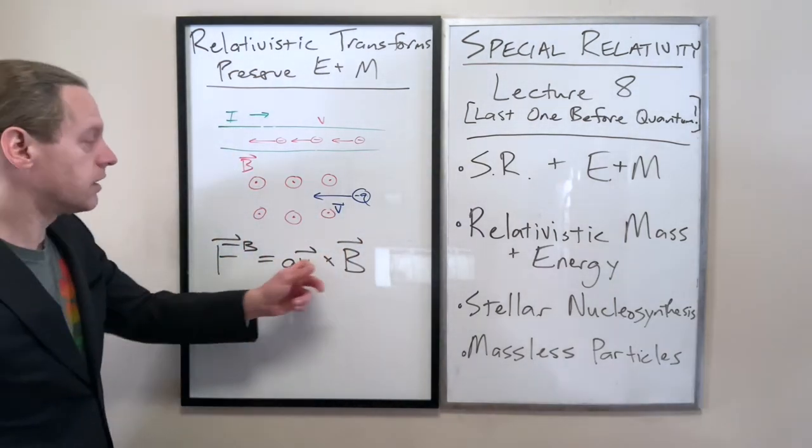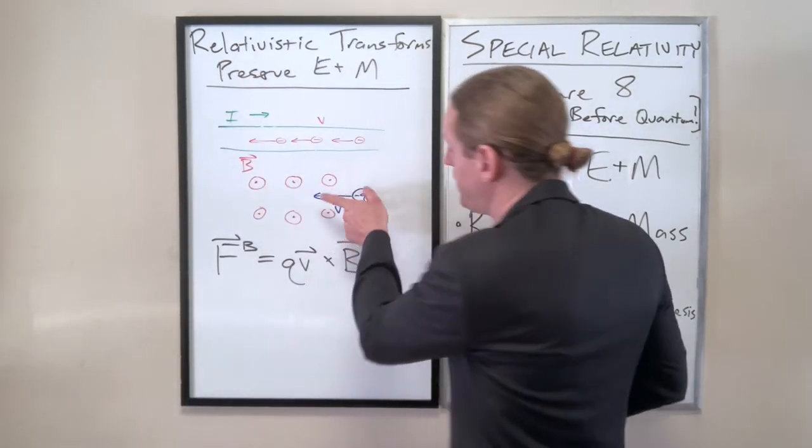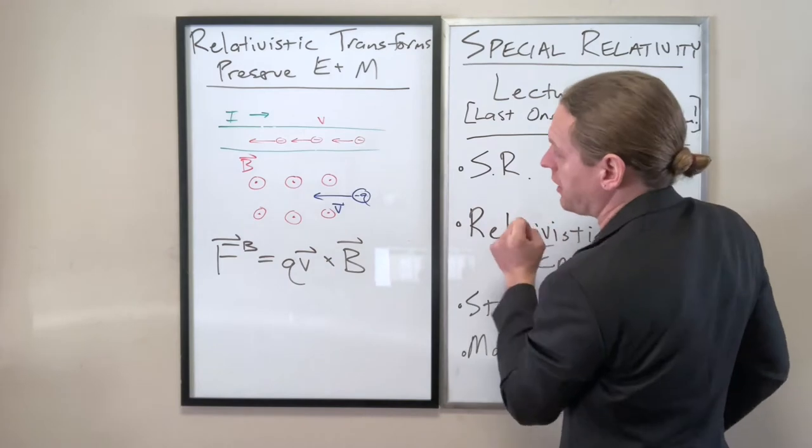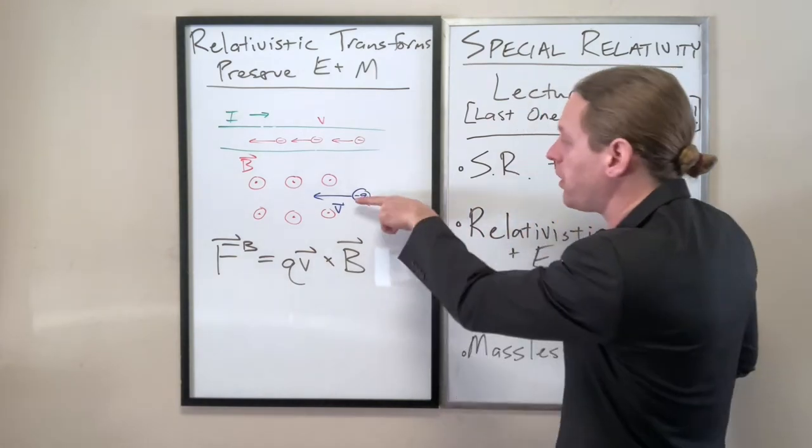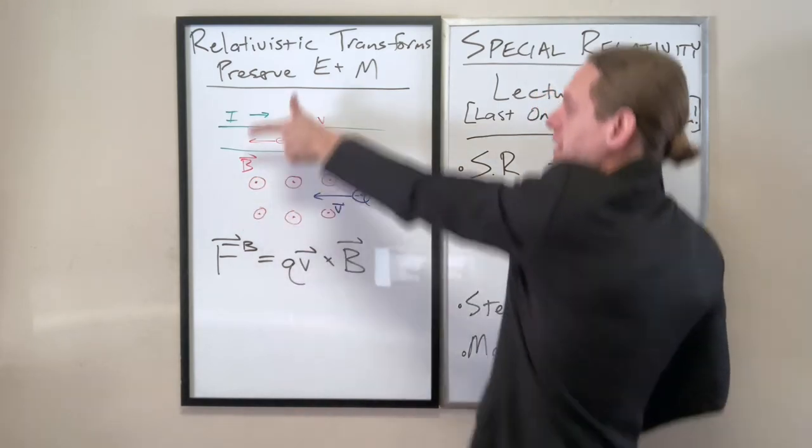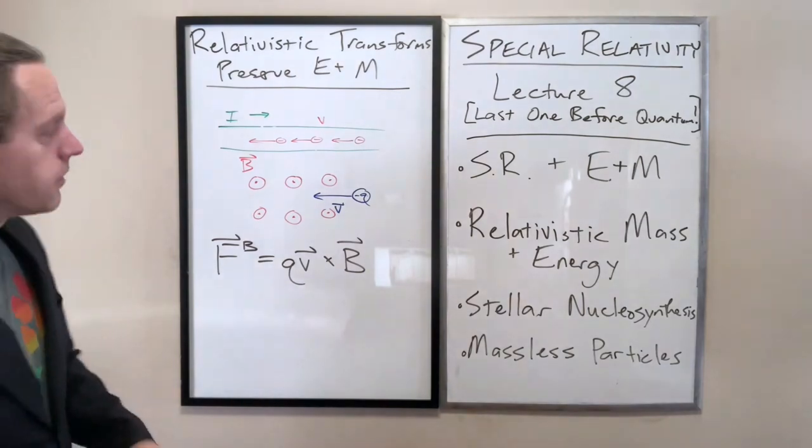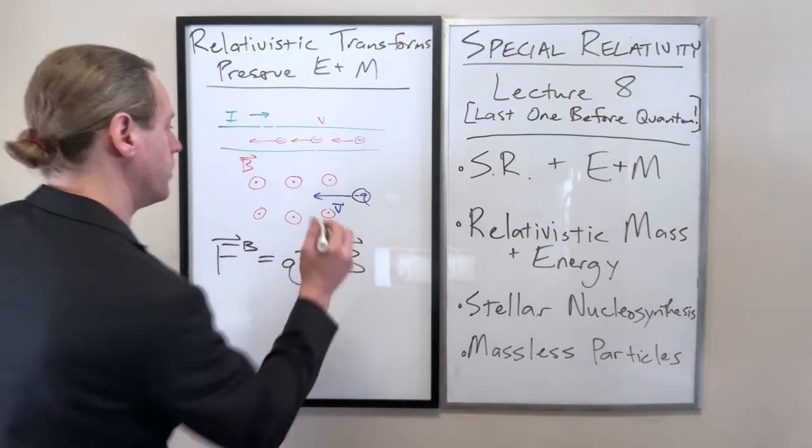Using the left-hand rule, because we have a negative sign, Q, which is just a scalar multiple, V crossed with B gives us the result that that particle is going to be pulled up towards the wire. So we're going to have a magnetic deflection upwards.